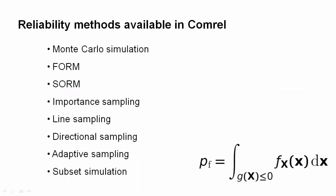In the previous example, we solved this integral by standard numerical integration. We could do this because our limit state function was rather simple and we had no more than two random variables. If a finite element model is behind the limit state function, or if the number of uncertain parameters is larger than two, standard numerical integration is too computationally demanding. Several reliability methods exist that can tackle this multidimensional integral: Monte Carlo simulation, the first-order reliability method (FORM), the second-order reliability method (SORM), importance sampling, line sampling, directional sampling, adaptive sampling, and subset simulation.